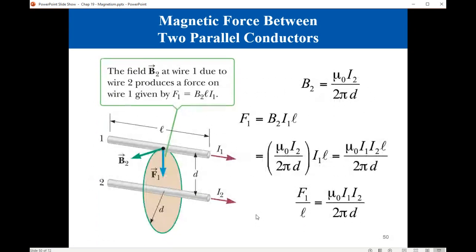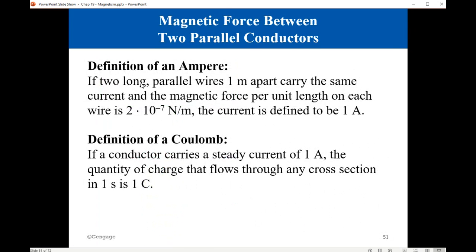We may use this result to define the ampere, the unit for current. Two long parallel wires one meter apart carry the same current, and if the magnetic force per unit length on each wire is 2×10⁻⁷ N/m, then the current is equal to 1 ampere.